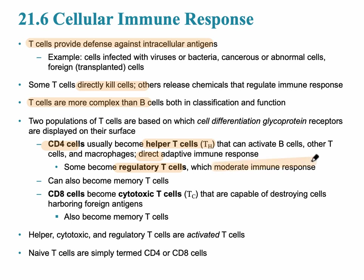Some CD4 cells can also become the regulatory T-cells, which moderate the immune response. These can also become memory T-cells. Remember that memory is an important classification characteristic of the adaptive immune response, and that can occur for both B-cells and T-cells. CD8 cells can become cytotoxic cells, capable of directly destroying cells, and they can also become memory T-cells.